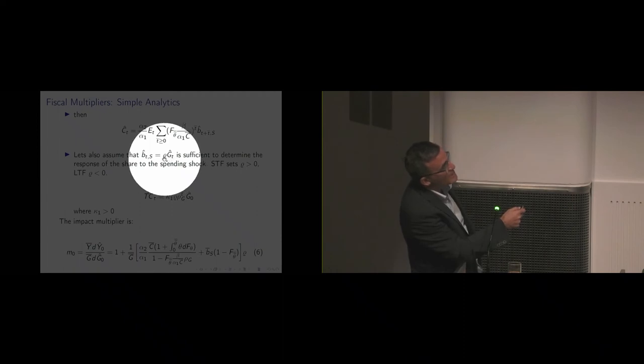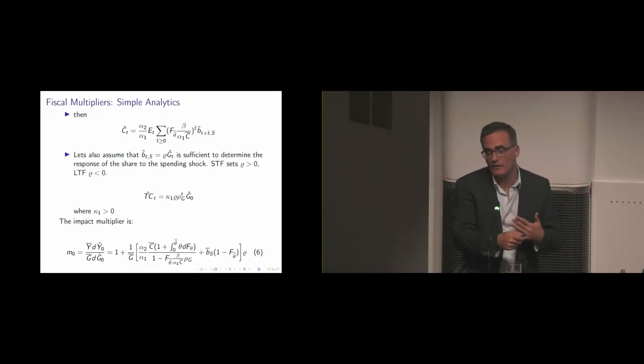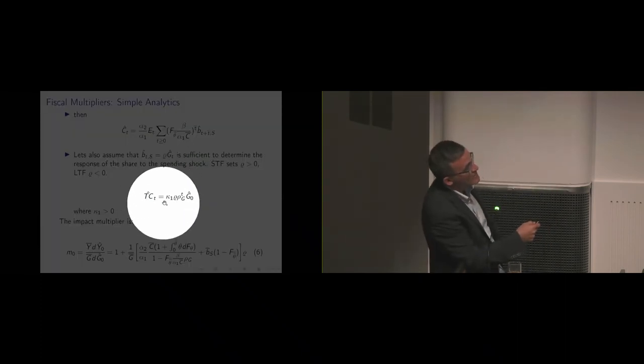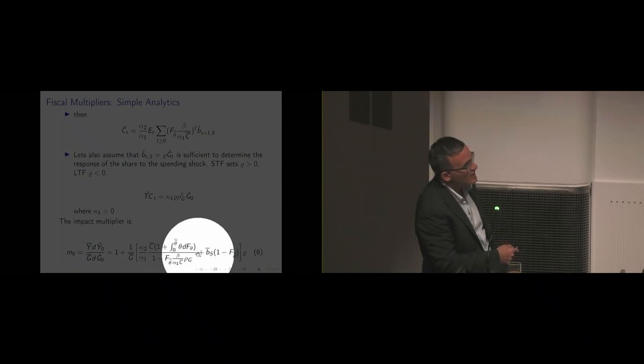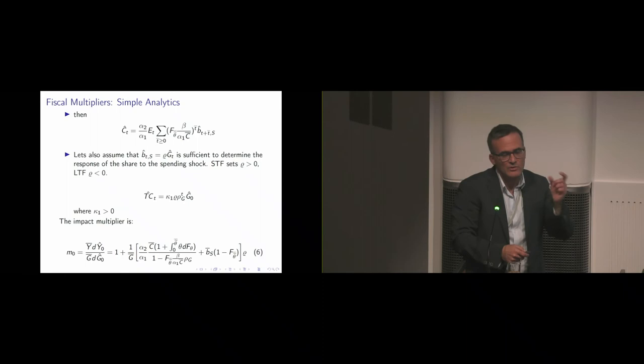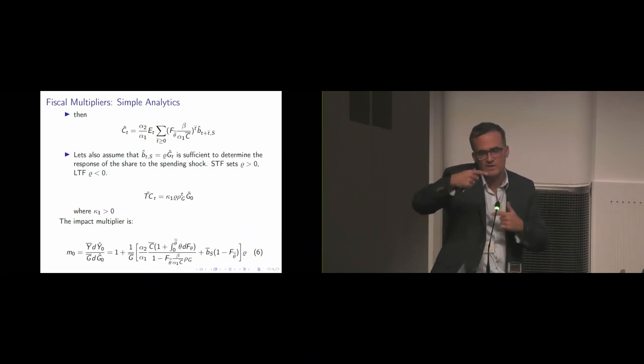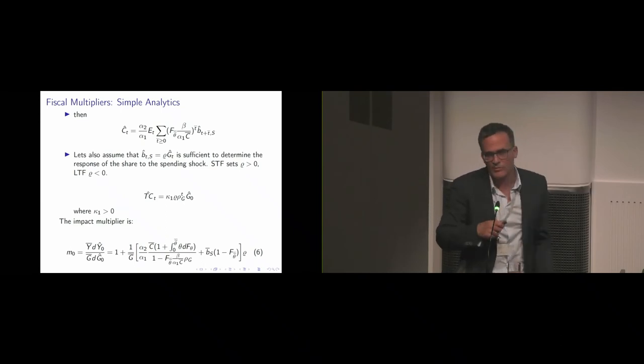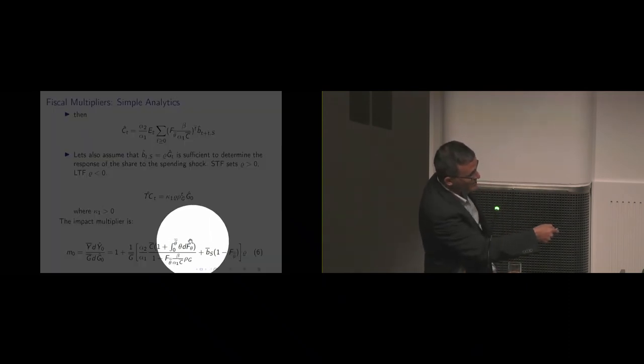Now if you solve this forward, what you get is consumption as a function of the short bond supply. In this model, if you assume also that taxes are lump sum, you can actually make the claim that the short bond supply is equivalent to the share of short over long-term debt. It's kind of an analytical, simple analytics framework that we're using here.